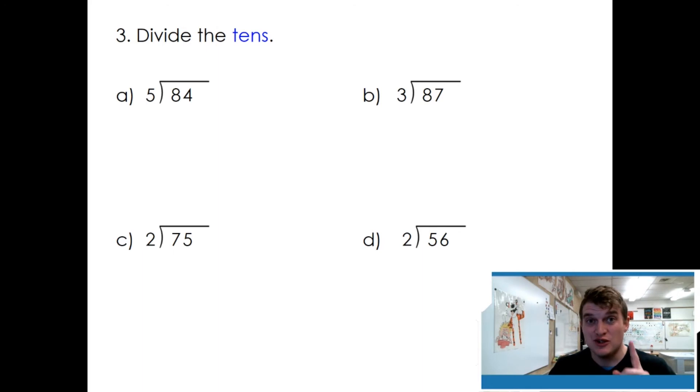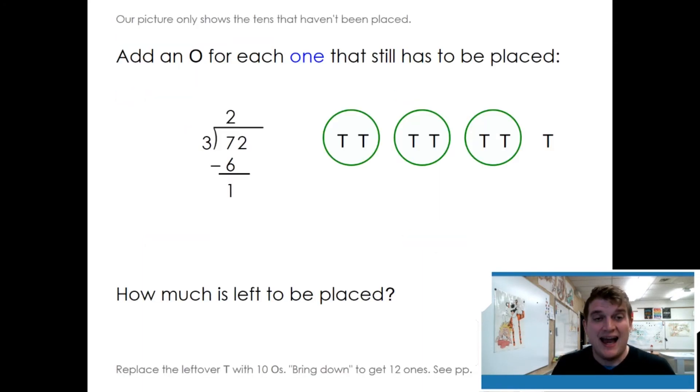Divide the tens. See if you can remember all three steps. We first share eight tens with five friends. Eight tens can only be shared once with five friends. One times five is five. Then we need to subtract. Eight minus five is three. Add a zero for each one that still has to be placed. There are two tens that haven't been placed. How much is left to be placed? One ten and two ones is twelve. To show this in our standard algorithm, all you have to do is bring down the two ones to make twelve. See how easy that is?